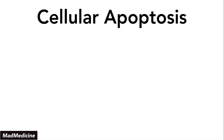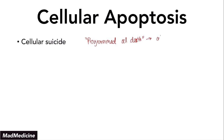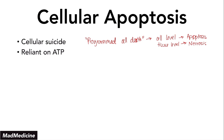Cellular apoptosis is also known as cellular suicide, and this is considered programmed cell death. Cellular apoptosis is happening at the cell level, meaning it involves either small cells or a very small number of cells. When you have cell death occurring at the tissue level, we call this necrosis. This mechanism is reliant on ATP — you cannot commit cellular suicide without ATP. And this is a genetically programmed mechanism, meaning there are genes and intrinsic factors built inside of the cell to kill itself off.